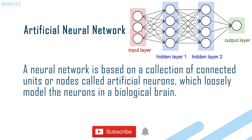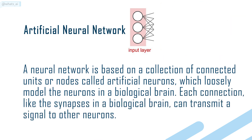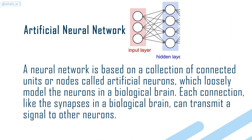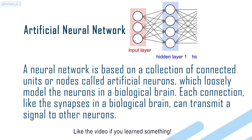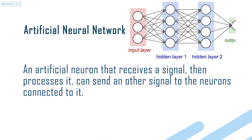A neural network is based on a collection of connected units or nodes called artificial neurons, which loosely model the neurons in a biological brain. Each connection, like the synapses in a biological brain, can transmit a signal to other neurons. An artificial neuron that receives a signal, then processes it, can send another signal to the neurons connected to it.